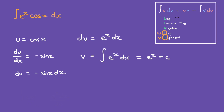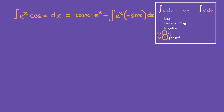Let's follow the formula. We have u times v: u is cosine of x times v, which is e to the power of x — we can ignore the plus c here. Then we have the minus sign and the integral of v times du. v is e to the power of x, and du is negative sine of x times dx. Bringing this negative outside the integral makes it positive, so we have cosine of x times e to the power of x plus the integral of e to the power of x sine of x dx.